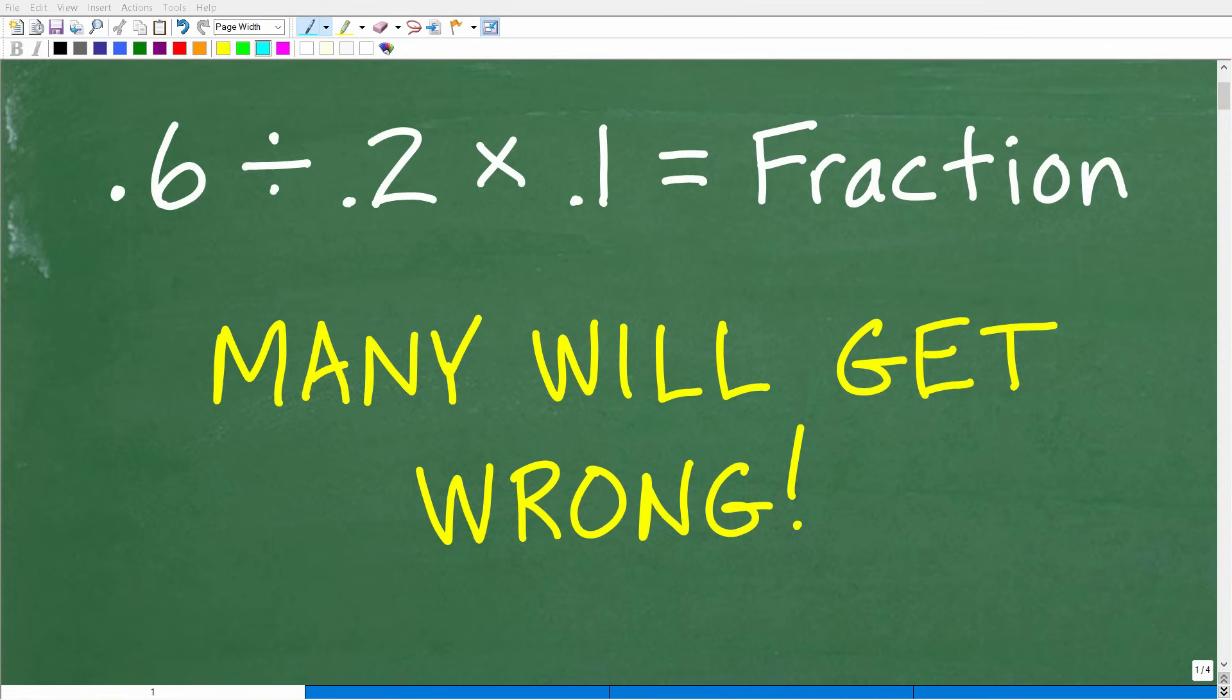Okay, so let's see if you remember enough math to do this problem without the aid of a calculator. Now a lot of people are going to try this and get it wrong, not because it's particularly difficult, but primarily because most people forgot basic math like this, especially doing hand calculations with decimals. The problem is 0.6 divided by 0.2 times 0.1, and we want to express our answer as a fraction.